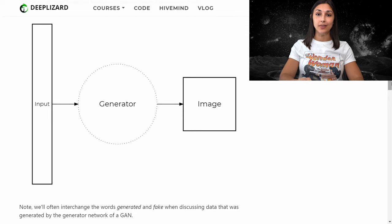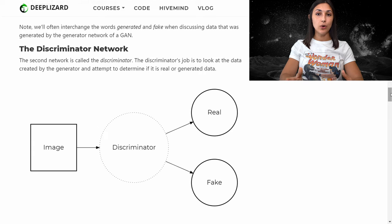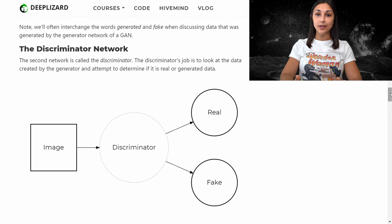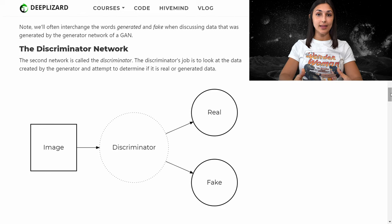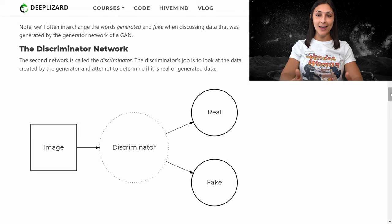The goal of the discriminator network is to look at images created by the generator and decide whether or not these images are real or fake. A discriminator network is essentially a standard binary classifier that classifies data between two different categories — in the case of GANs, those two categories are real and fake. We'll be going into much more detail about the generator and discriminator in upcoming episodes.